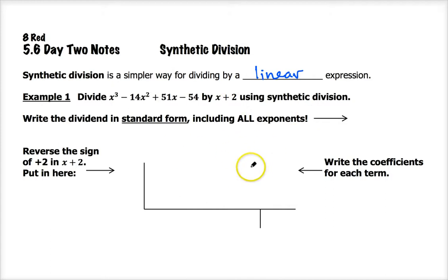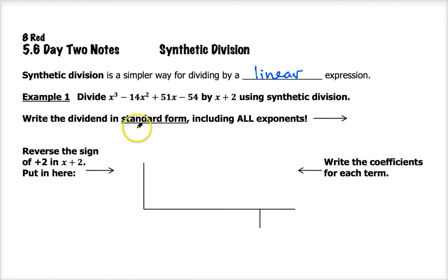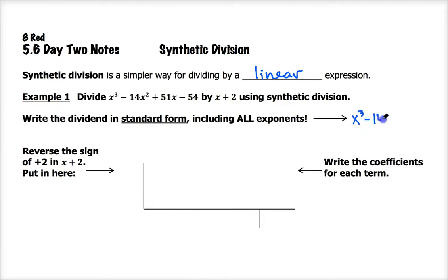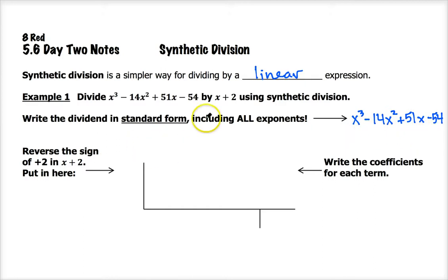I'm going to show you how this is set up here in this diagram. It's going to take a little bit of practice and look a little bit weird, but I think you'll get the hang of it after just a couple of examples. The first thing I'm going to do is identify my dividend and write that here below in standard form, including all of the exponents. My dividend is x cubed minus 14x squared plus 51x minus 54. Then I'm going to look at my divisor, which is x plus 2.